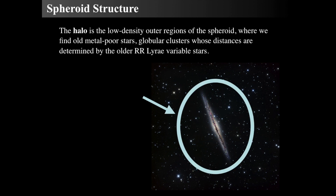The halo is a much lower density region of the spheroidal component. You don't easily see it in the image, but it's there. We'd find old, metal-poor stars, globular clusters, and RR Lyraes inside those globulars, which help us determine distances. We can detect these globular clusters by looking at deep images that somewhat over-process the galaxy itself.